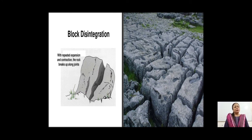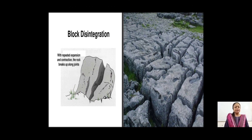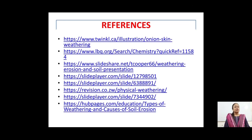To summarize, we have learnt about three types of physical weathering: exfoliation or onion peeling where the rock breaks layer by layer; granular disintegration where the rock breaks grain by grain due to differential rate of expansion and contraction; and block disintegration where a big block breaks down due to alternate heating and cooling. Thank you students, that's all for today.